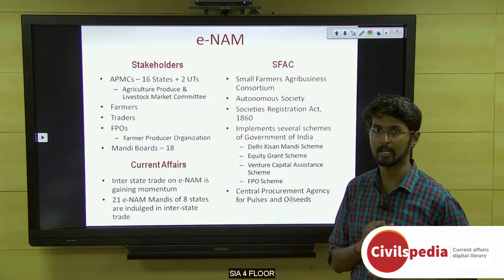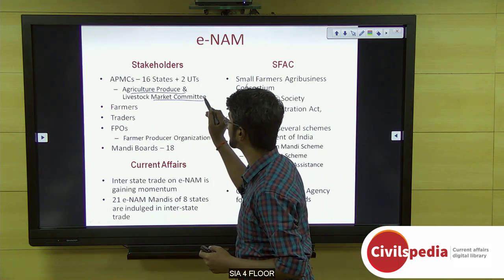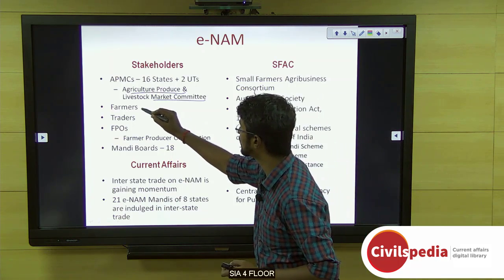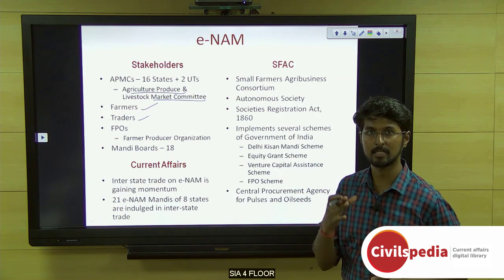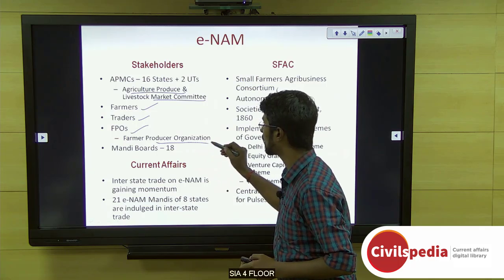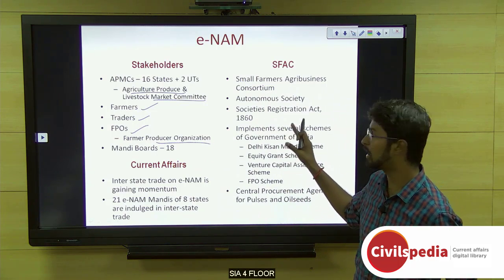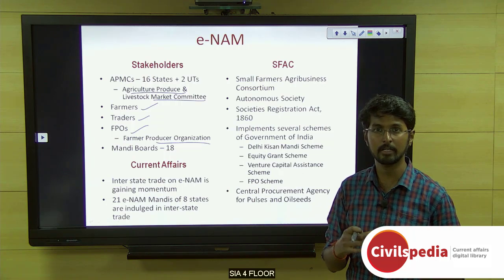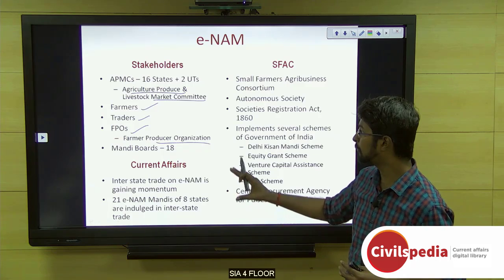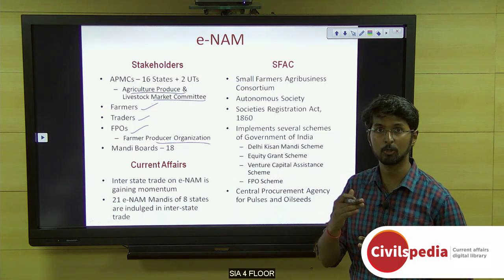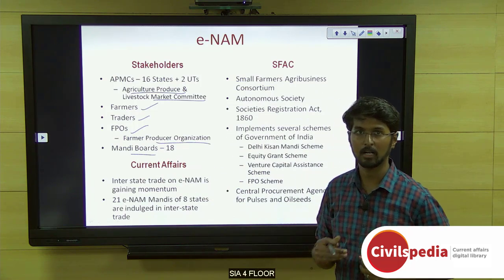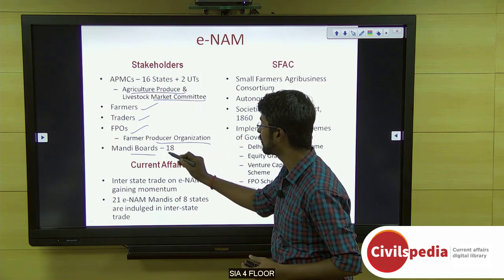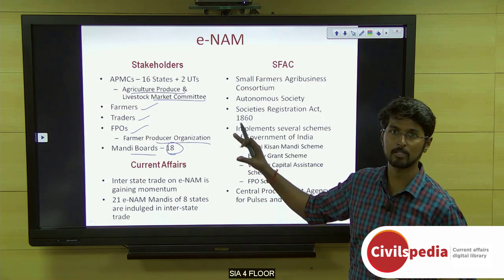The stakeholders under the eNAM portal include the Agricultural Produce and Livestock Market Committees from different states — as of now 16 states and 2 union territories have joined. Farmers, traders involved in Mandi trading, and Farmer Producer Organizations formed under SFAC are also stakeholders. Farmer Producer Organizations are groups of farmers who join together to market their produce, similar to a cooperative. Mandi Boards from all participating states are stakeholders as well.